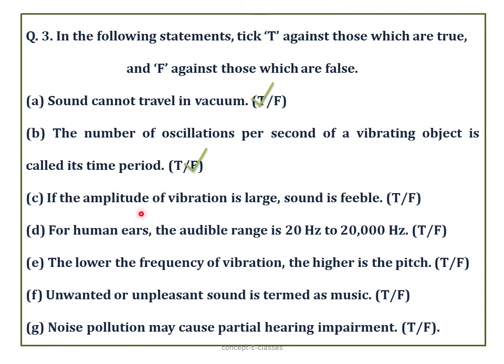(C) If the amplitude of vibration is large, sound is feeble — False, because loudness is directly proportional to the square of amplitude. If amplitude is large, the sound would be loud; if amplitude is small, the sound would be feeble. (D) For human ears, the audible range is 20 Hz to 20,000 Hz — True. (E) The lower the frequency of vibration, higher is the pitch — False. If frequency is high, pitch is high; if frequency is low, pitch is low.